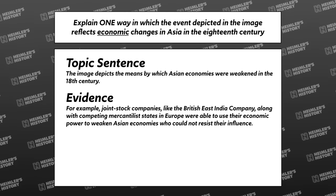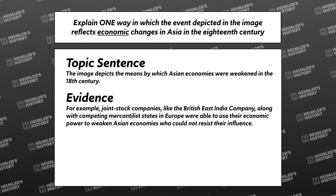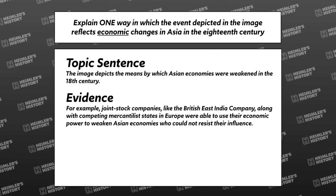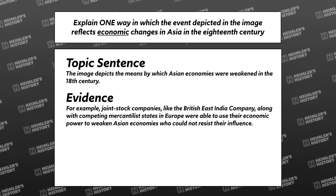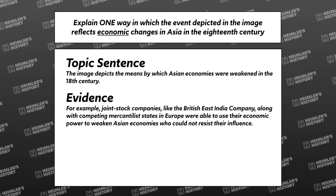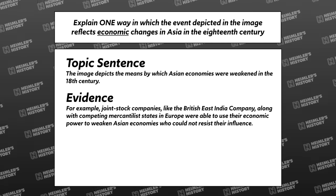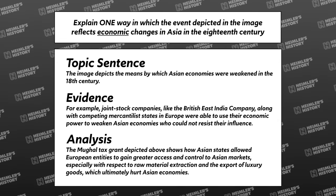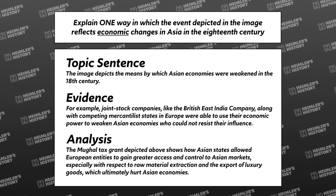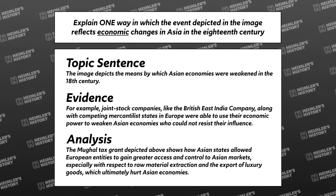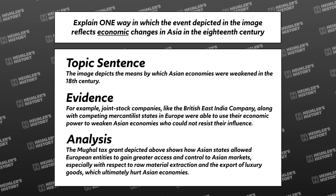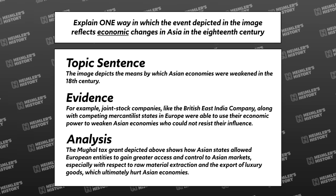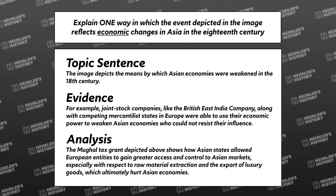Now for evidence — a specific example of how Asian economies were weakened: 'For example, joint stock companies like the British East India Company, along with competing mercantilist states in Europe, were able to use their economic power to weaken Asian economies who could not resist their influence.' Now for analysis — showing how the second sentence proves the first: 'The Mughal tax grant depicted above shows how Asian states allowed European entities to gain greater access and control to Asian markets, especially with respect to raw material extraction and the export of luxury goods, which ultimately hurt Asian economies.' Topic sentence. Evidence. Analysis. Nailed it!